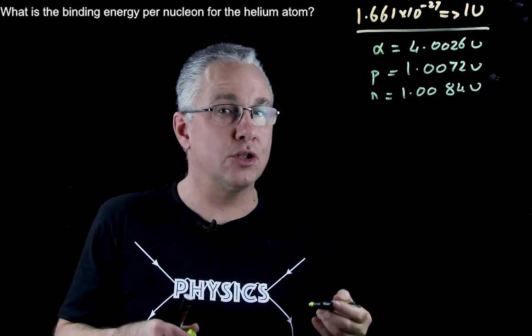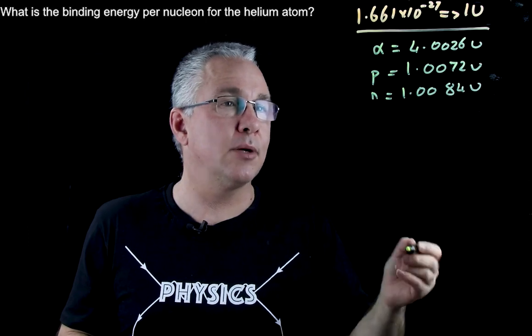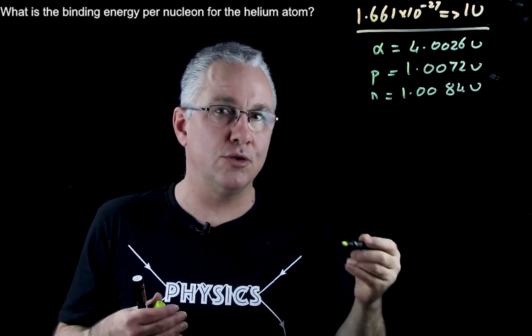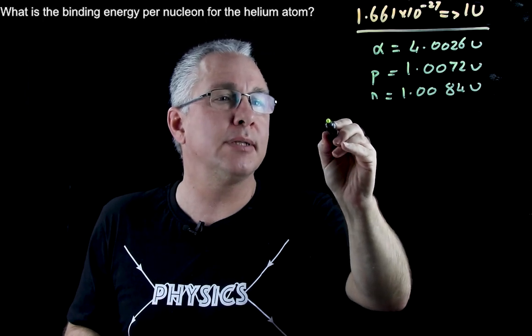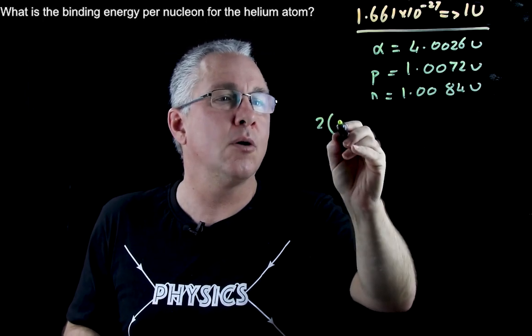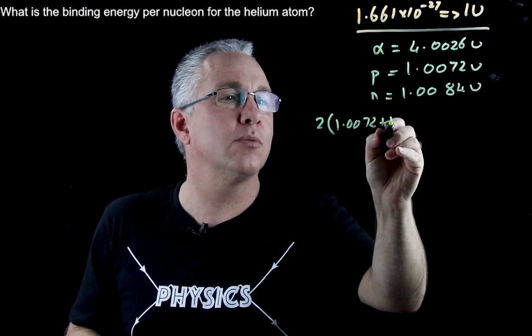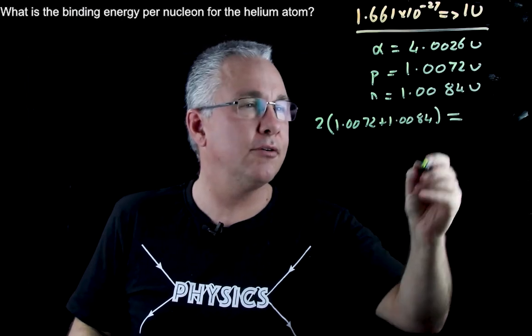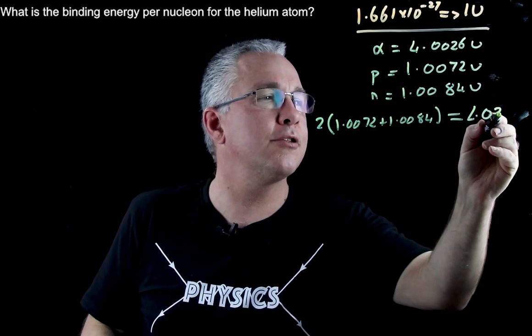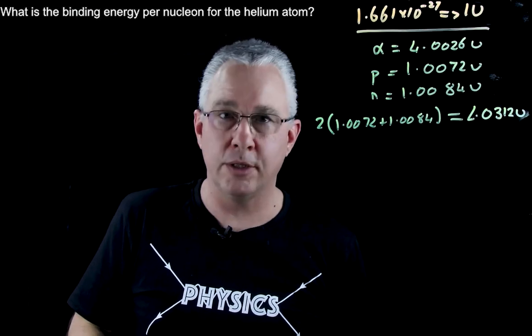Now we're in the position to work out the mass defect. So we know our two protons and two neutrons make up our alpha particle. So if I simply go 2 times 1.0072 plus 1.0084, that's going to give me a value of 4.0312u.